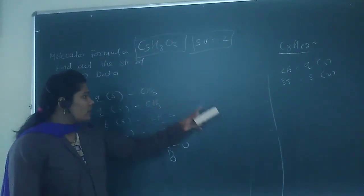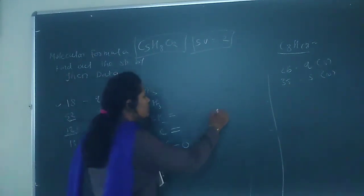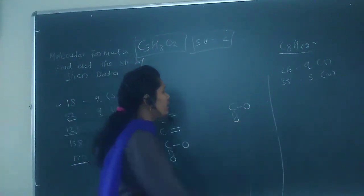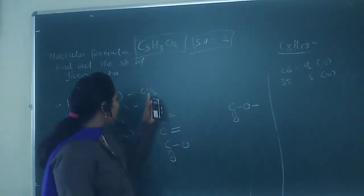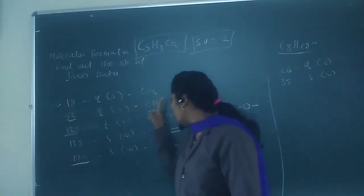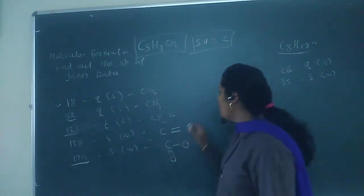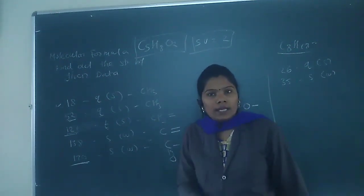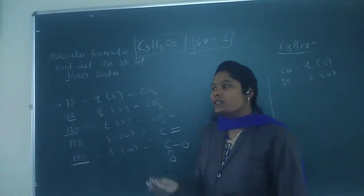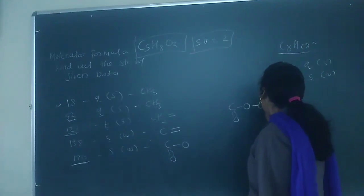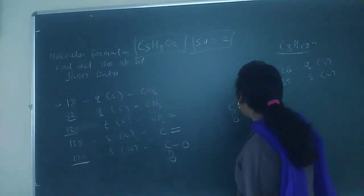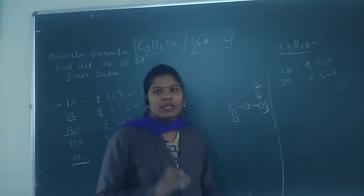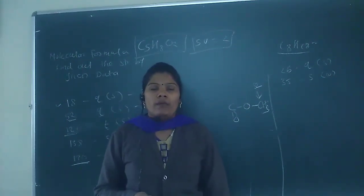Let's start drawing the structure. First, we draw the ester group: C(=O)O. Near the oxygen there must be an alkyl group. We have two CH3 groups: one at 18 and one at 52. The CH3 with the higher value (52) is attached directly to the electronegative oxygen of the ester, because electronegativity increases the chemical shift value.